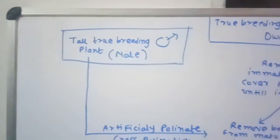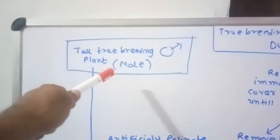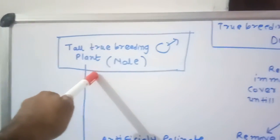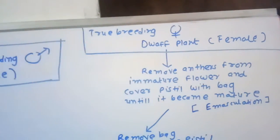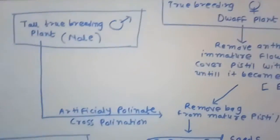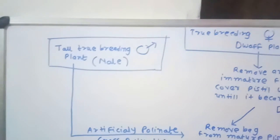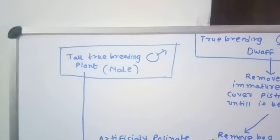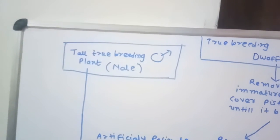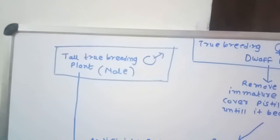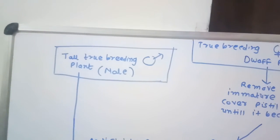Here there is a complexity. This type of pollination is called cross-pollination. The problem was that the pea plant belongs to the Fabaceae family, and flowers of the Fabaceae family are bisexual — meaning they have both androecium and gynoecium.